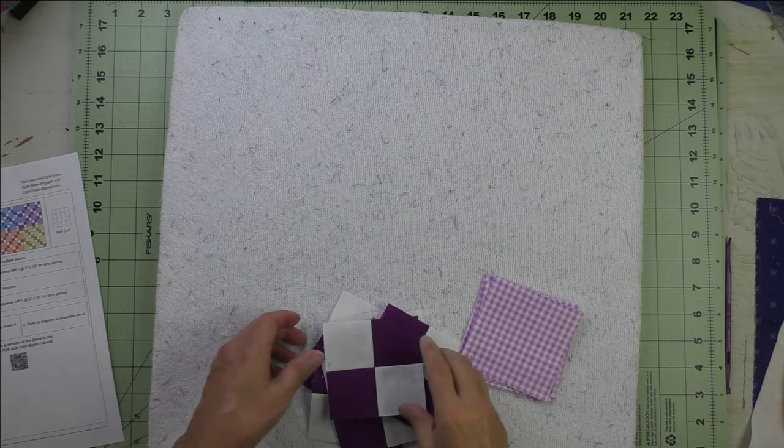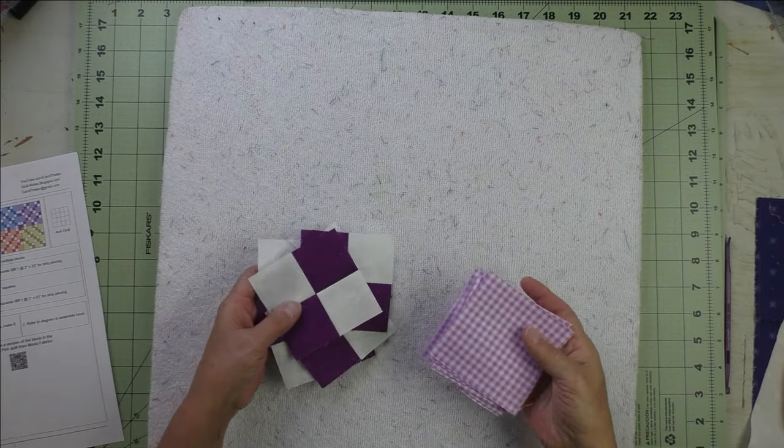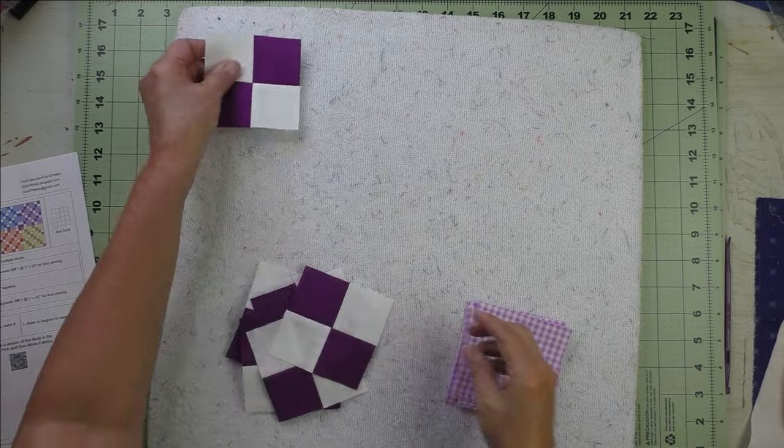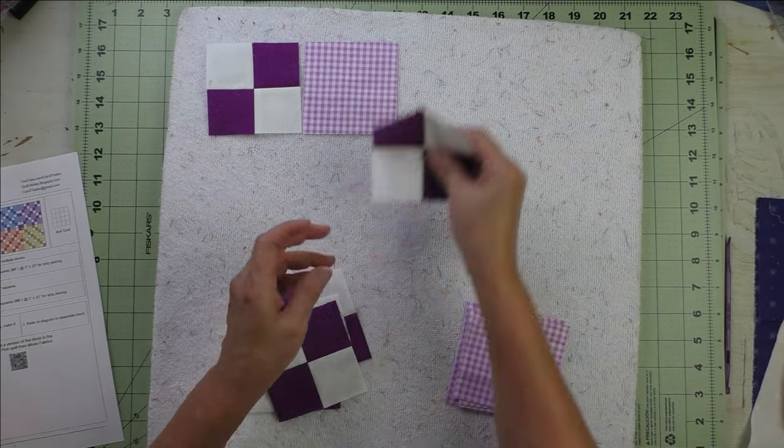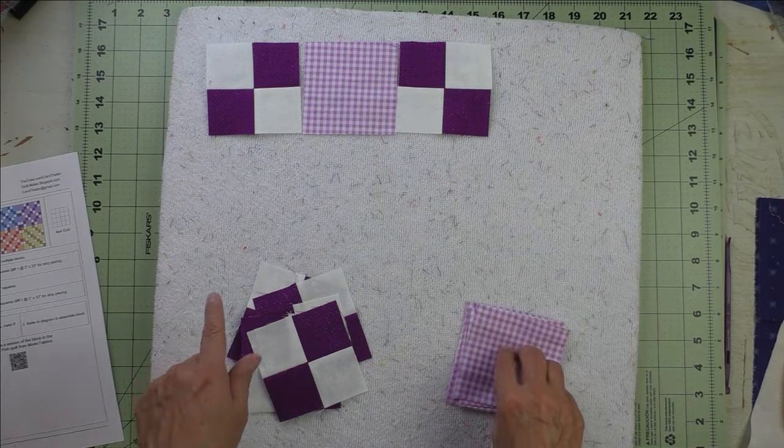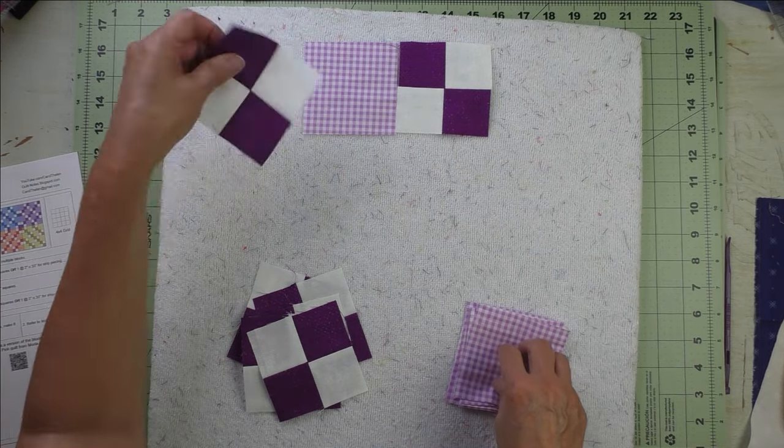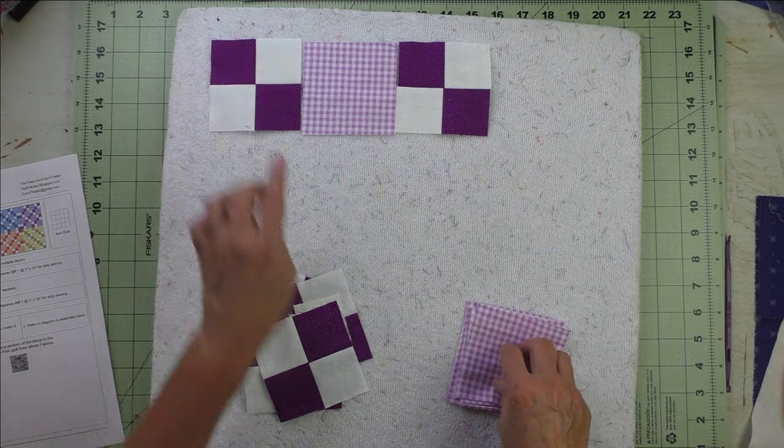Now we just look at our diagram and take our four patches and our plain squares and lay out the block. We're just going to alternate the four patches with the plain patches and pay attention to the placement of the dark fabrics.